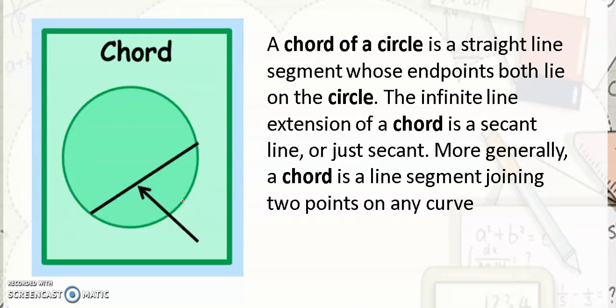Next will be the chord. A chord of a circle is a straight line segment whose endpoints both lie on the circle. More generally, a chord is a line segment joining two points on the circle. So this part is a chord, this is also a chord, and this is also a chord — it is the segment connecting two endpoints on the edge of a circle.